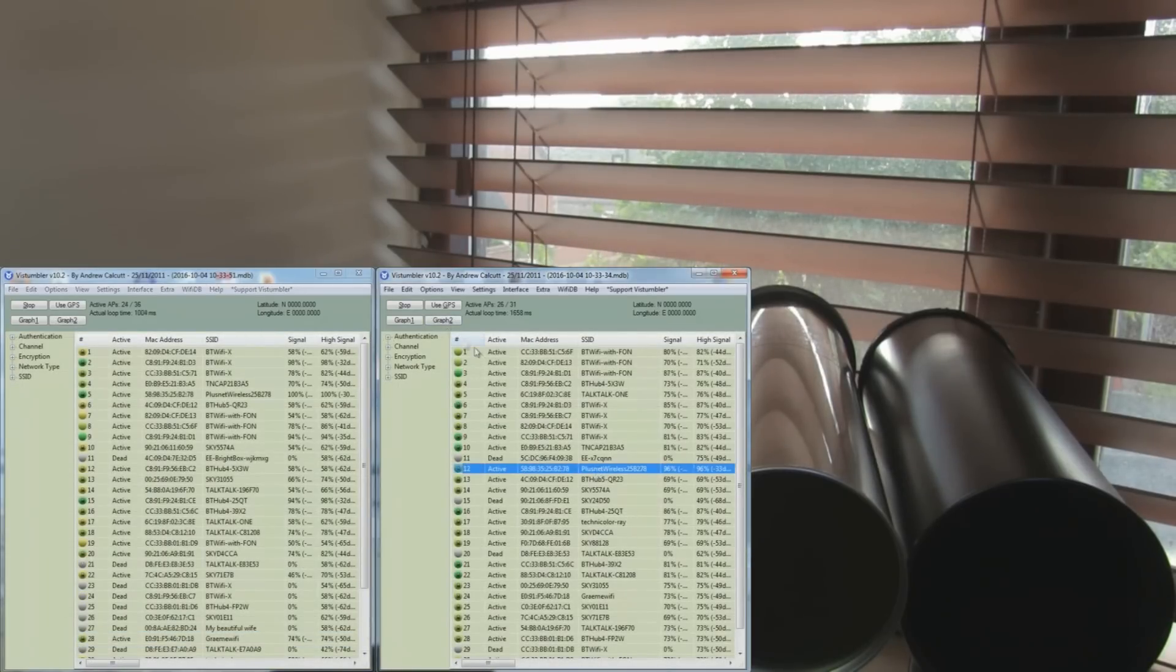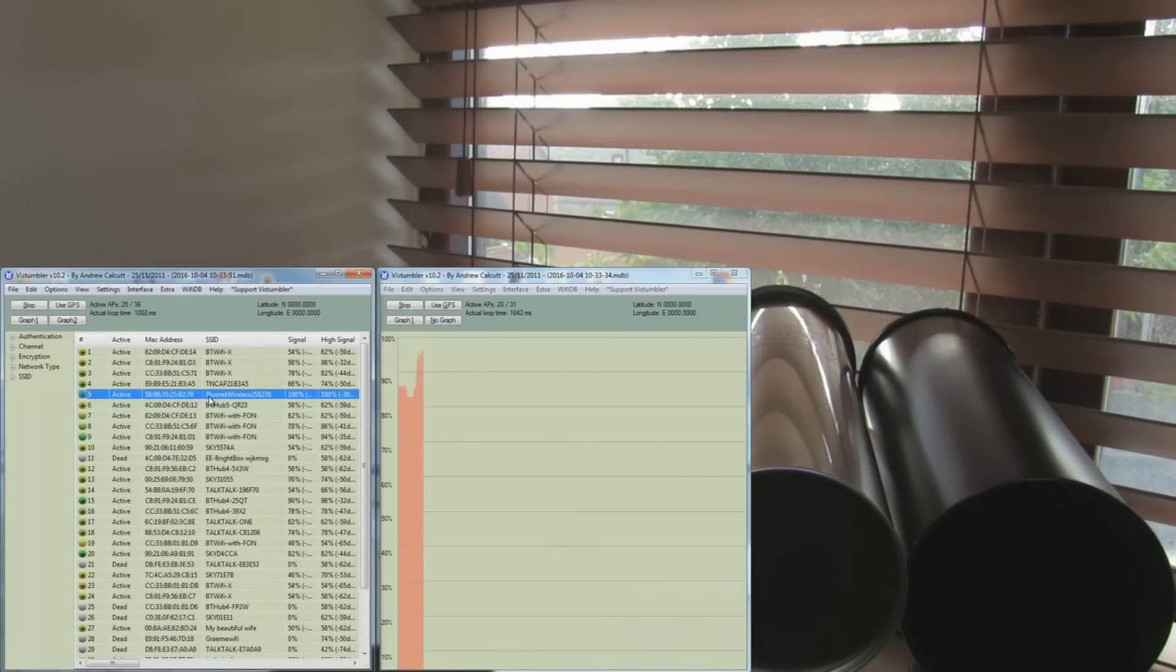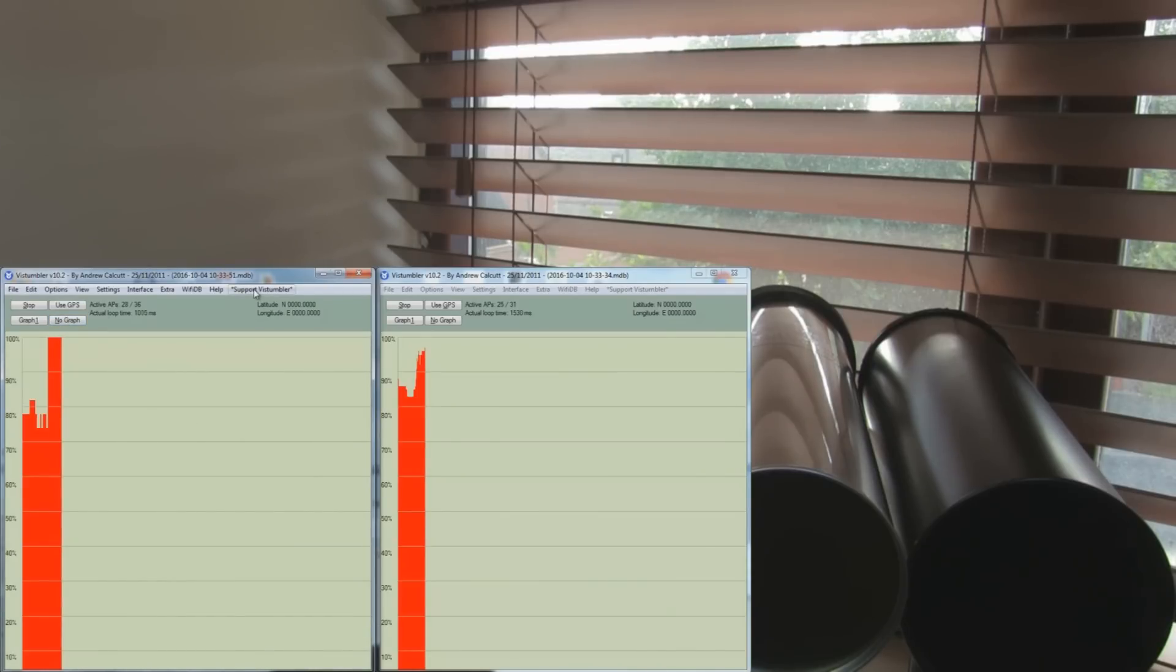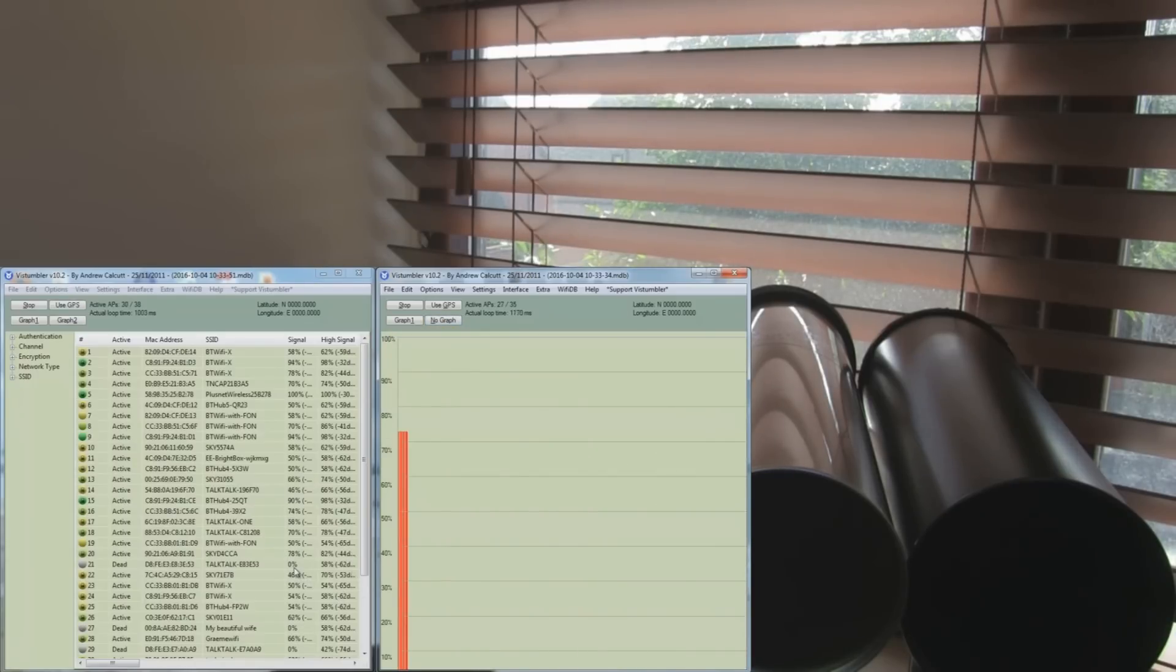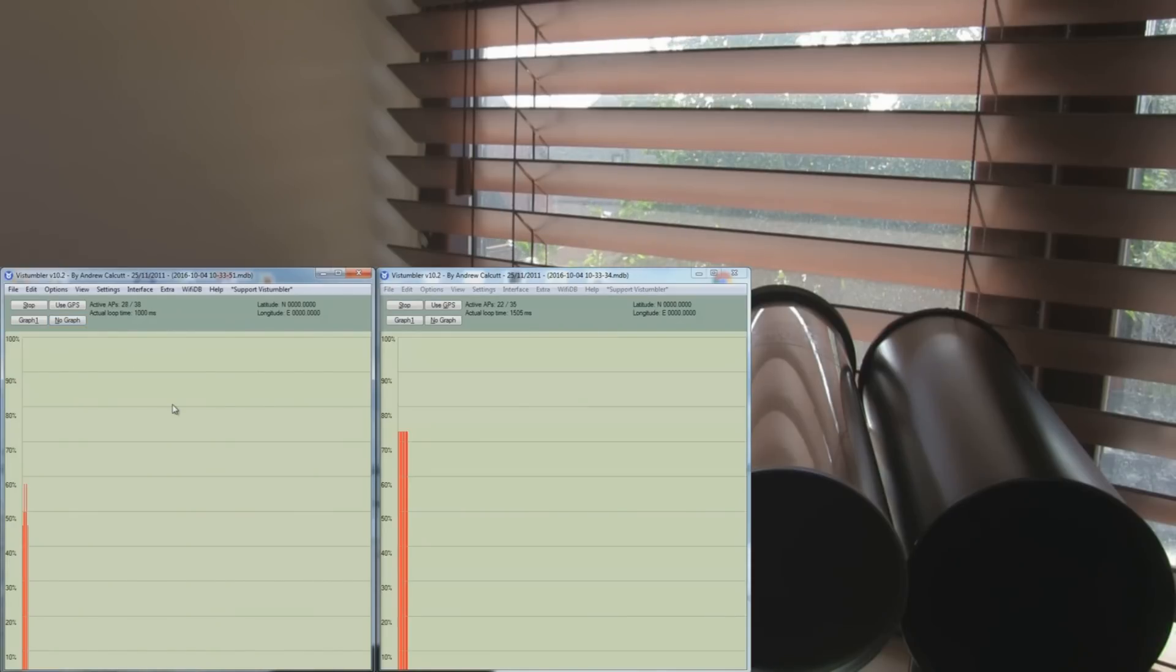Here's the Plus Net access point that seems really strong on the Turbo Tenner. The Turbo Tenner is above 100 percent on that one, where mine's hovering around 94 percent. We'll take a look at this Talk Talk one. It's a little bit further away. Mine has dropped out a couple of times but seems really stable at around 75 percent, where the Turbo Tenner has dropped out a few times and is hovering around 47 to 48 percent.